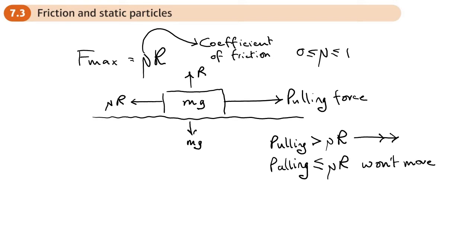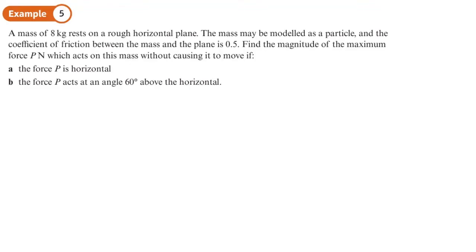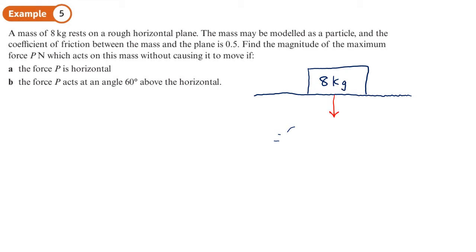If the pulling force equals mu R, the object is in equilibrium or on the point of moving. Starting with a diagram: we have a rough surface with an 8 kg mass, weight 8g downward, a normal reaction R, a horizontal force P, and a resistive friction force of mu R, which equals 0.5 R.